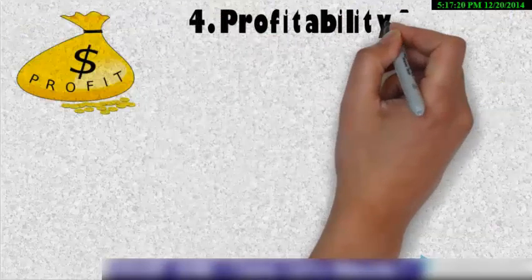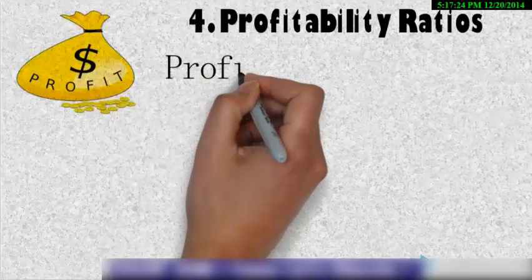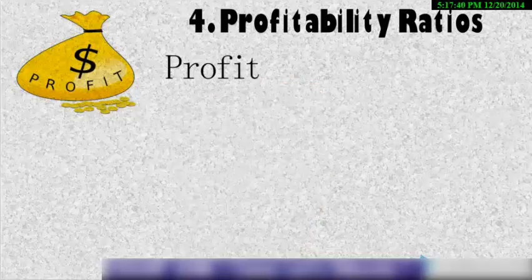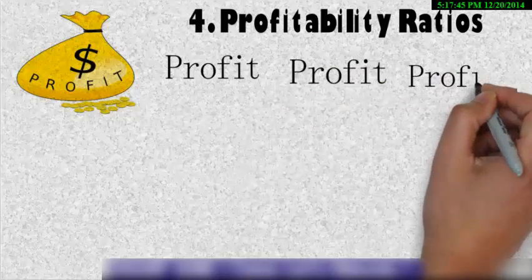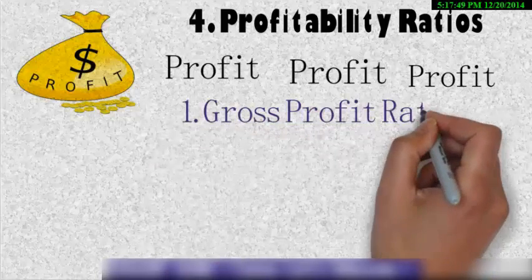Now the fourth and the last one is the profitability ratio. Now everyone and each of us knows that what is the main aim of doing business? The main aim is to earn profit and this profitability ratio helps us to know and compare the profitability of a company. It tells us the increase and decrease in the profit and the reason for that.